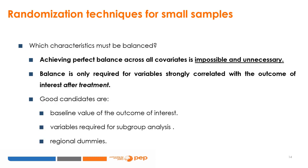The first question when dealing with balance is deciding which variables to balance. Achieving perfect balance across all covariates is impossible and unnecessary. Balance is only required for variables strongly correlated with the outcome of interest according to economic theory. Good candidates are the baseline value of the outcome of interest, variables desired for subgroup analysis, and geographic region dummies, since treatment implementation and shocks are likely to vary by region.